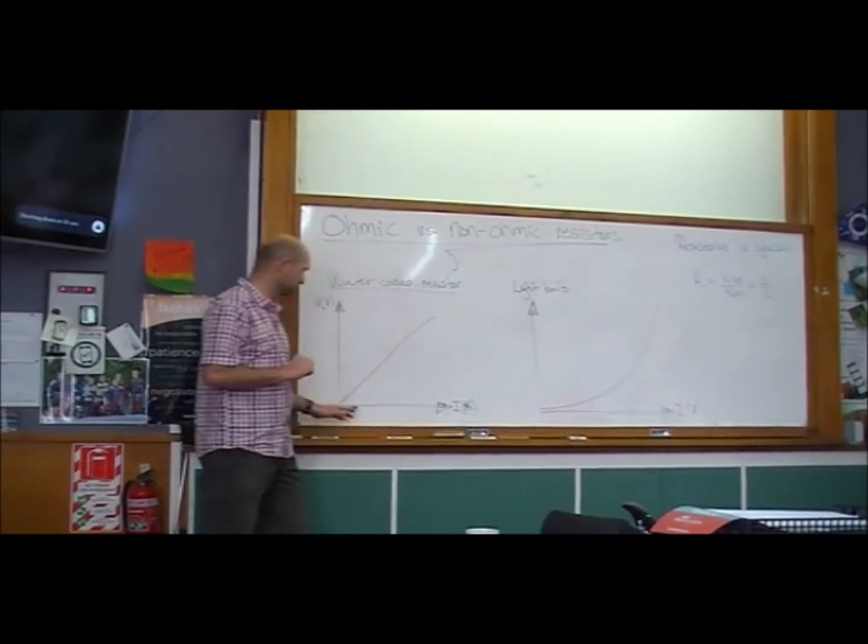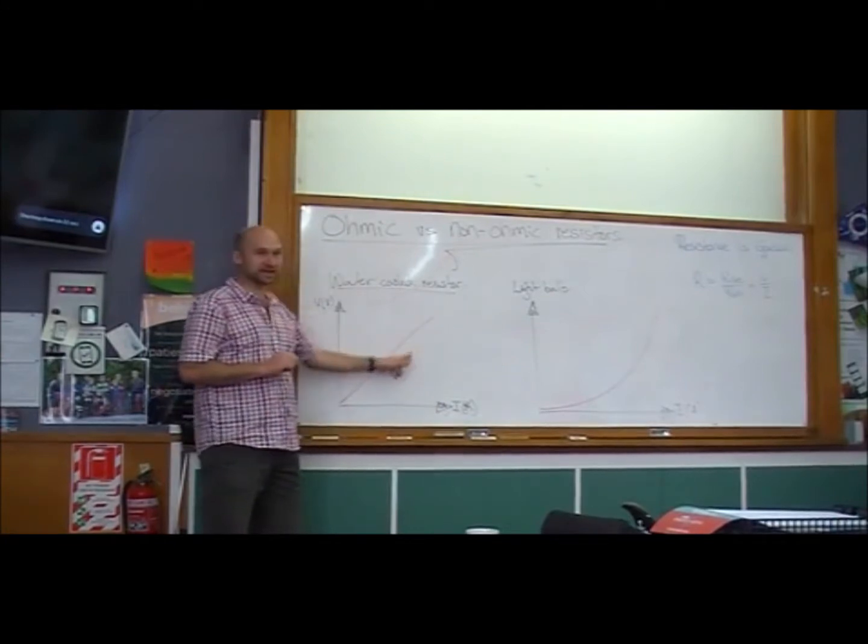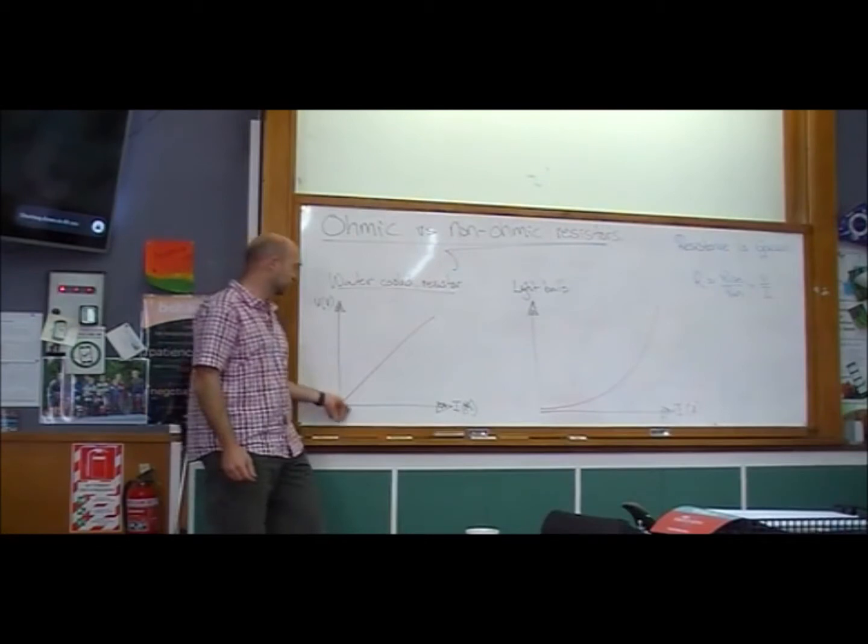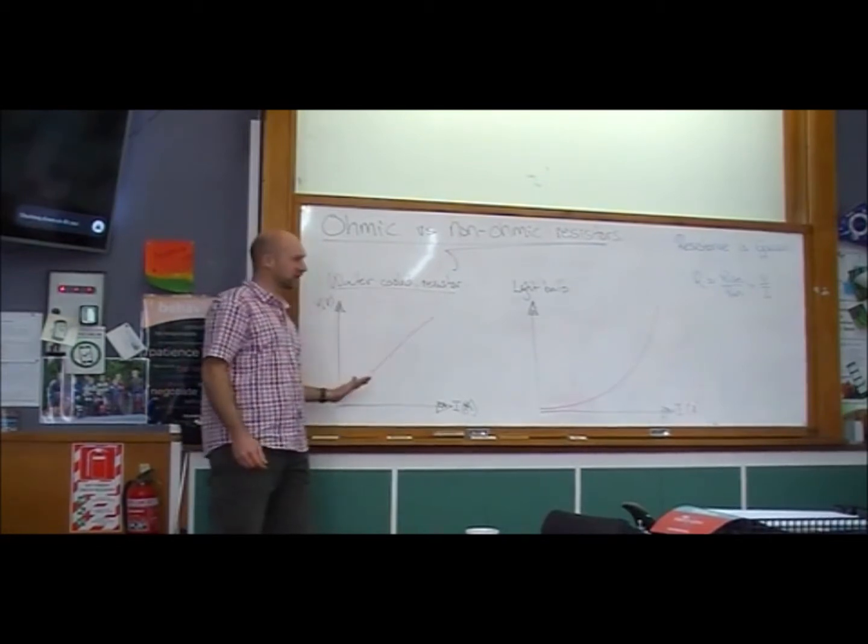we saw that the current went up and it was linearly proportional. It went up by the same ratio. Double the voltage, double the current. We've got a beautiful straight line.